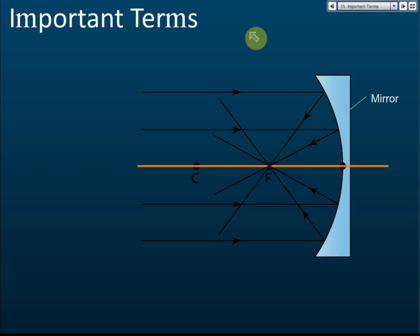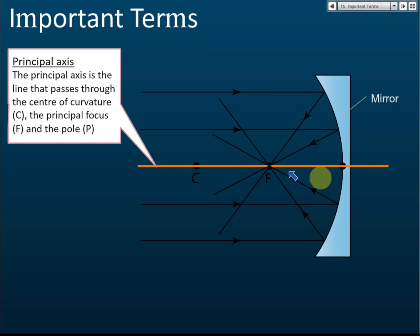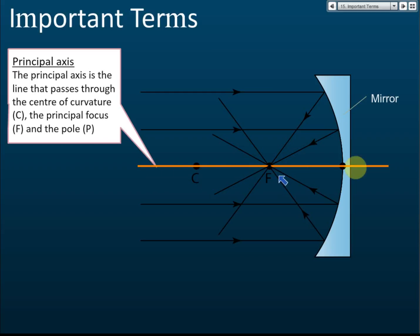Some important terms: the first one is the principal axis. If you draw a straight line to connect the center of curvature C and the pole P, that line is called the principal axis. You will find that the principal axis is perpendicular — 90 degrees — to the mirror.